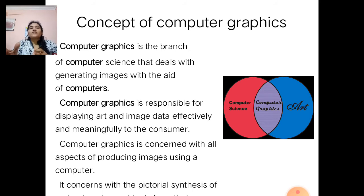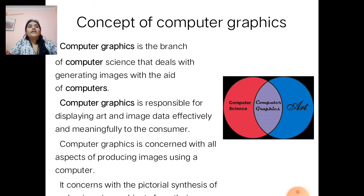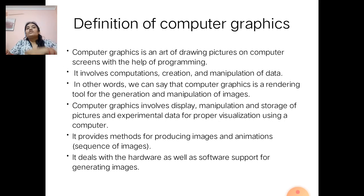Computer graphics is also a combination of computer science and art. When we combine computer science and art or drawing together, it forms computer graphics using different tools, algorithms, and programming. Computer graphics is an art of drawing pictures on a computer screen with the help of programming.